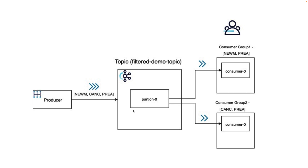Very quick recap: let's say a producer produces an event to a topic and the consumer listening to that topic listens only to specific events and not to all events based on a certain filter strategy. That is what we call filtered listening. So this consumer, consumer 0, is listening to only newM and preA events, and similarly consumer group 2 is listening to cancel and preA events. Today we are going to test consumer 0, which is only going to listen to the newM event and not the other events.